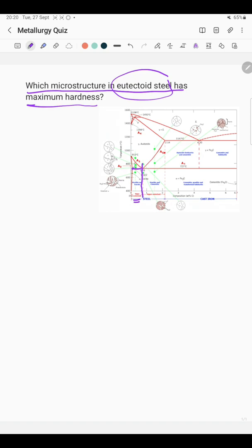And third is hypereutectoid, which contains carbon more than 0.76 to 2.14 percent. These are the three types of steel based on carbon content and microstructure.